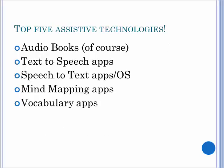We'll talk about audiobooks in a minute, then talk about the difference between audiobooks and text-to-speech apps, and then discuss speech-to-text. I've also included mind mapping and vocabulary as two really important applications that add a lot of value for dyslexic kids in terms of accommodating their weaknesses — for instance, creating written output and developing vocabulary.